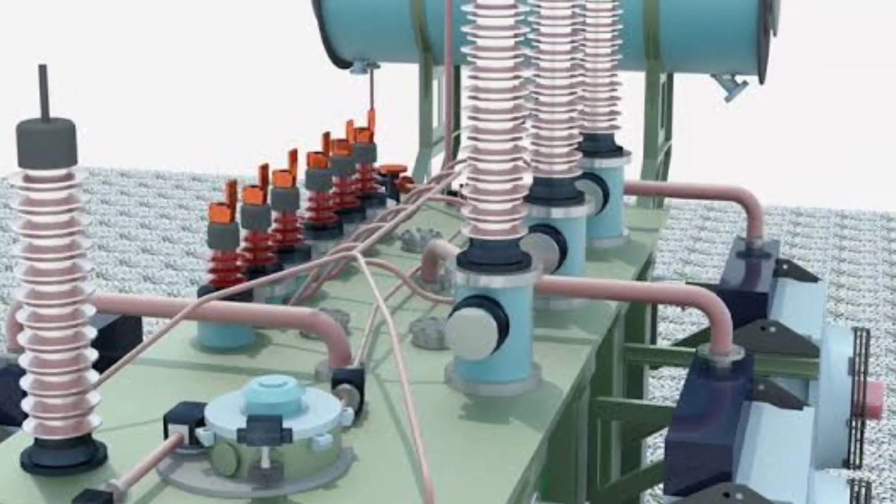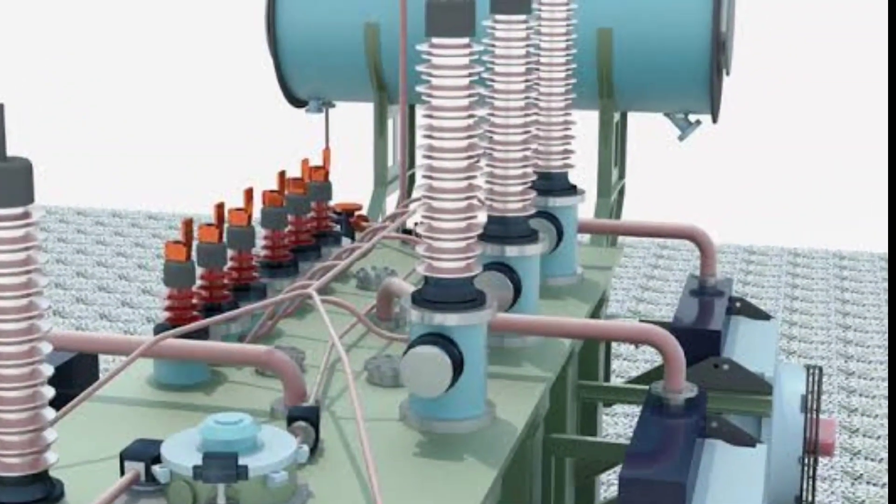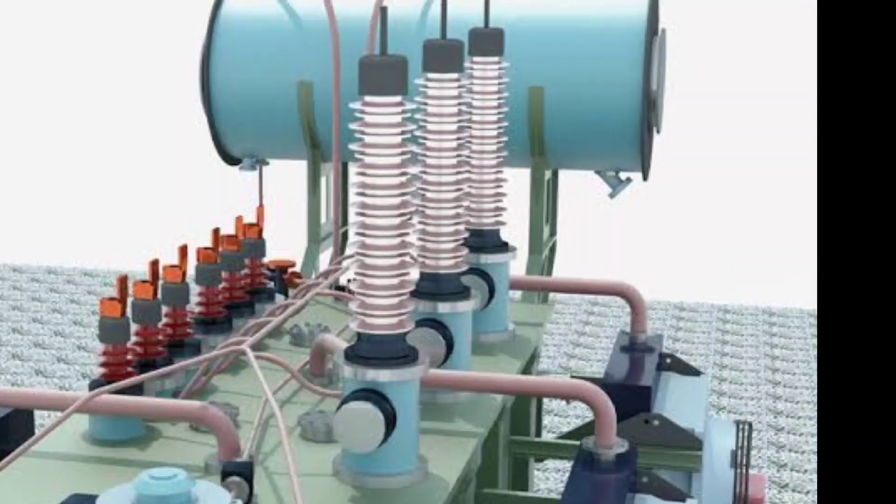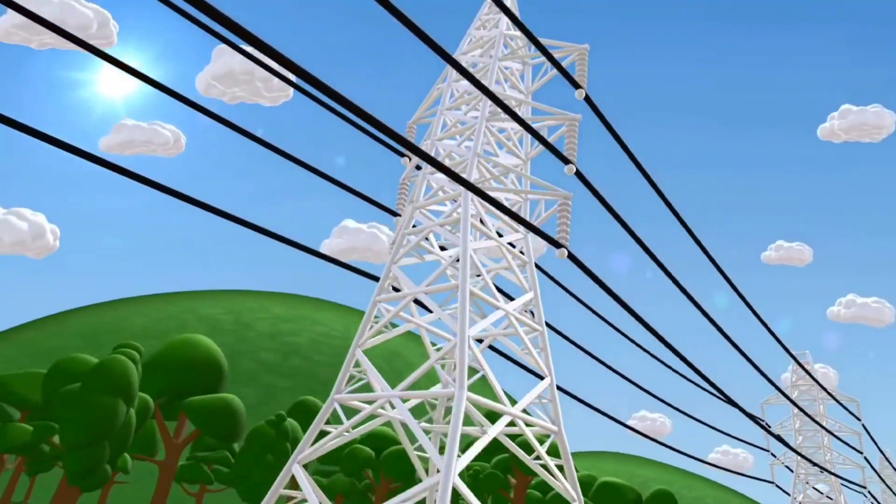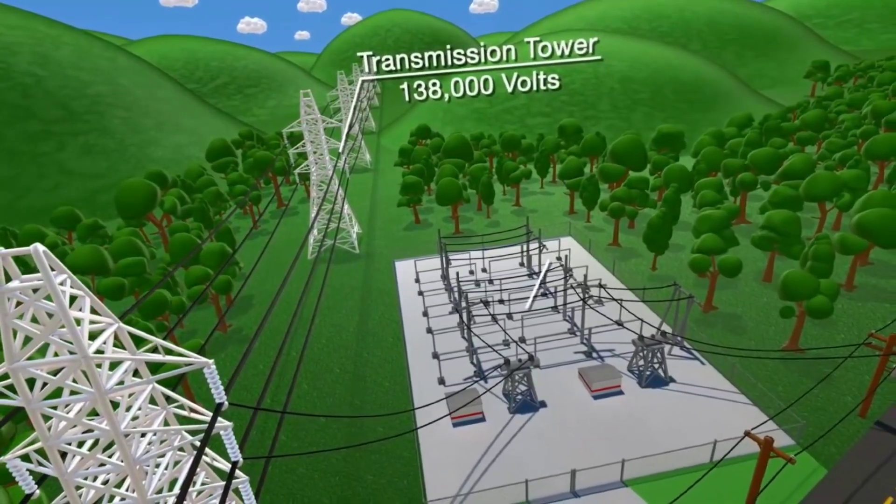A wind power plant will use a step-up transformer to increase the voltage, thus reducing the required current, which decreases the power losses that happen when transmitting large amounts of current over long distances with transmission lines.